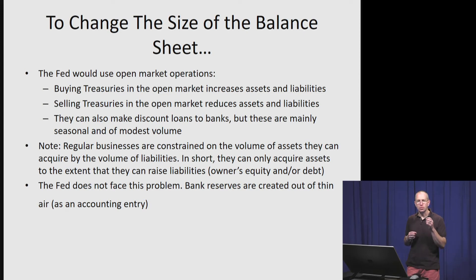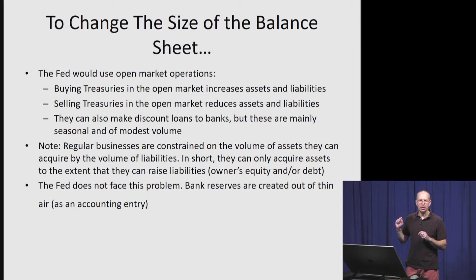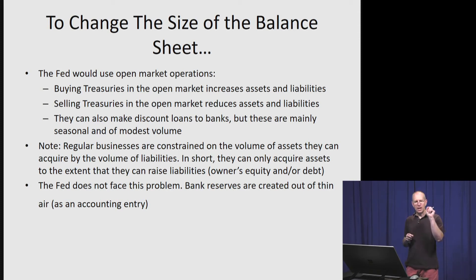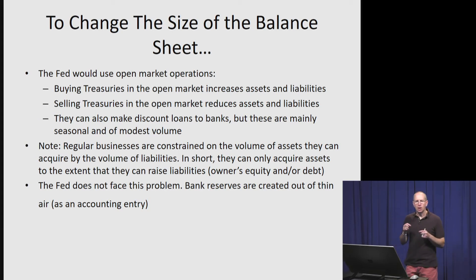One interesting side note: ordinary businesses face a constraint in that if they want to add a dollar to their asset side of the balance sheet, they have to acquire a dollar's worth of liabilities — either borrowing a dollar or putting in owner's equity. The Fed isn't so constrained. They can create liabilities as an accounting entry and then use those liabilities to acquire assets. That's something the Fed and all other central banks are able to accomplish.